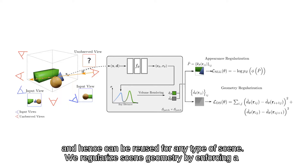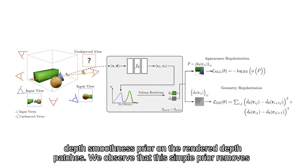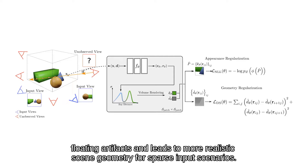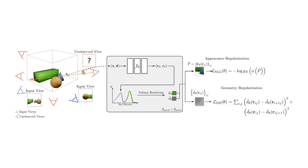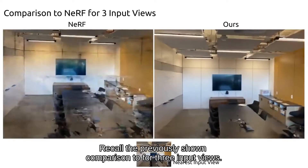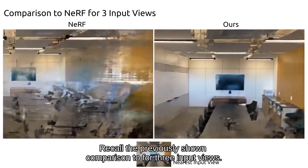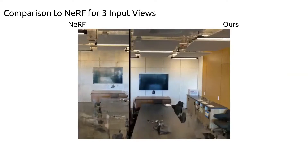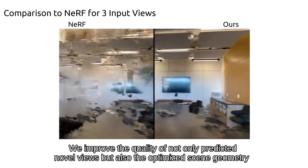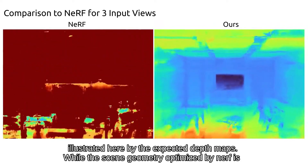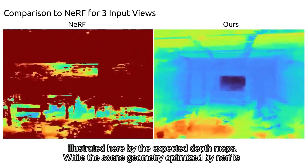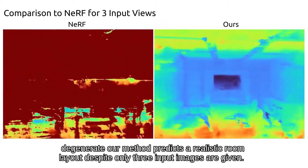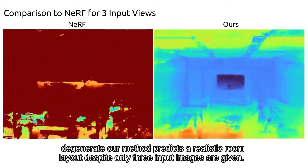We regularize scene geometry by enforcing a depth smoothness prior on the rendered depth patches. We observe that this simple prior removes floating artifacts and leads to more realistic scene geometry for sparse input scenarios. Recall the previously shown comparison to NeRF for three input views. We improve the quality of not only predicted novel views but also the optimized scene geometry illustrated by the expected depth maps. While the scene geometry optimized by NeRF is degenerate, our method predicts a realistic room layout despite only three input images being given.